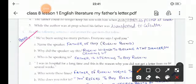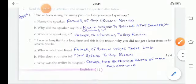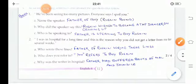Name of the speaker: it's the father of boy Ruskin Bond. Why did the speaker say this? Ruskin wished to become a tap dancer on growing up. Who is he speaking to? His father is speaking to boy Ruskin.